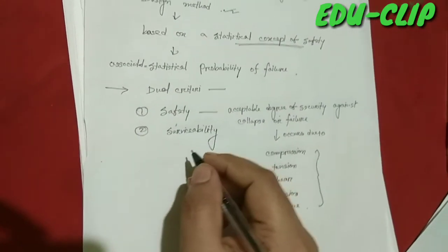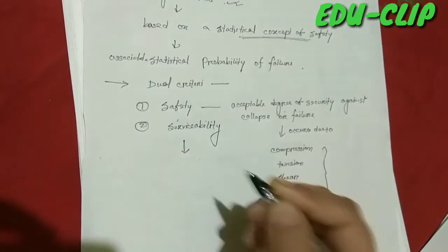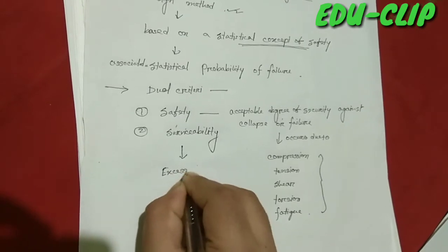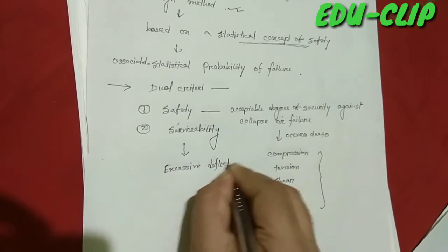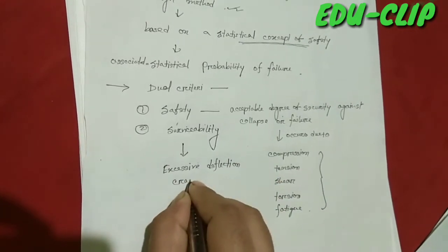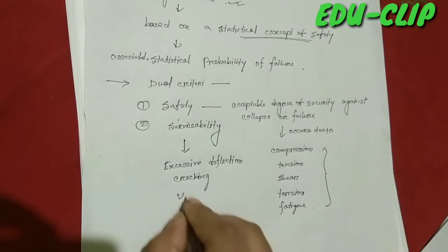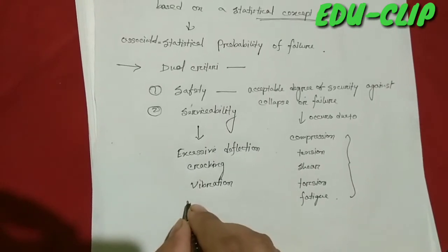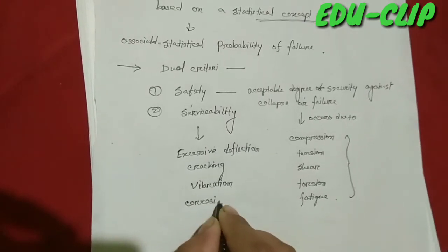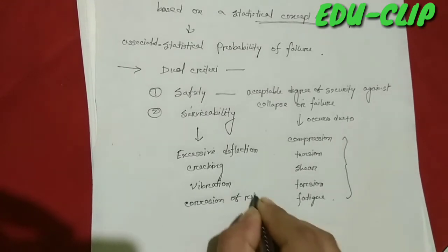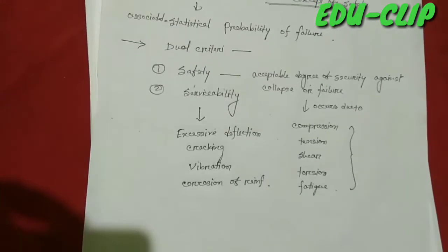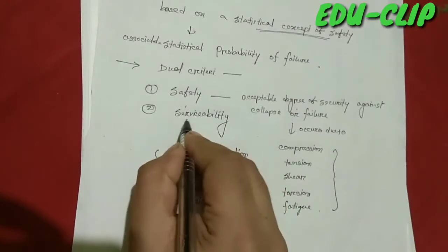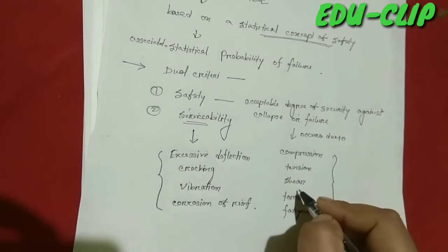Now coming to serviceability — in serviceability, failure occurs due to excessive deflection, cracking, vibration, and corrosion of reinforcement. These are the modes of failure that occur in serviceability.